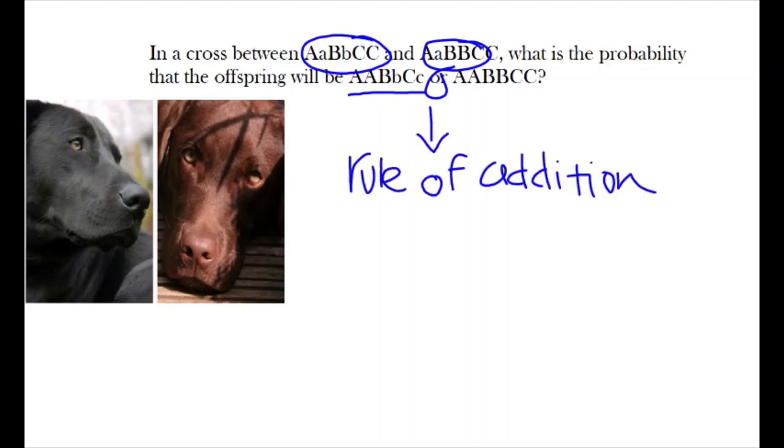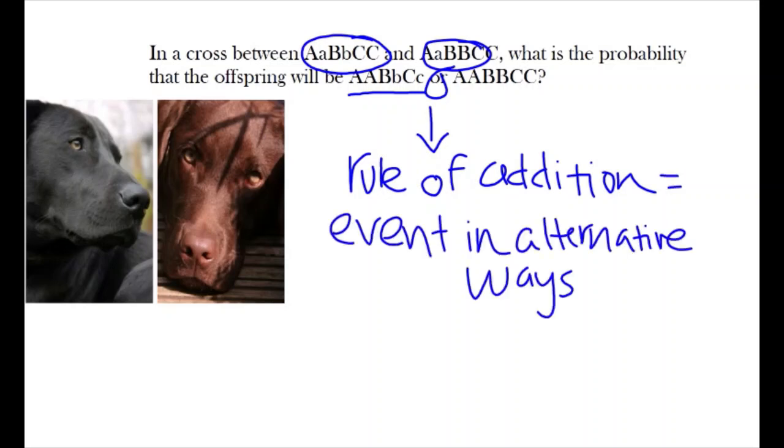This OR is a key indicator for the rule of addition. The rule of addition states that a probability of an event occurring in two or more alternative ways is the sum of the separate probability of those different ways.